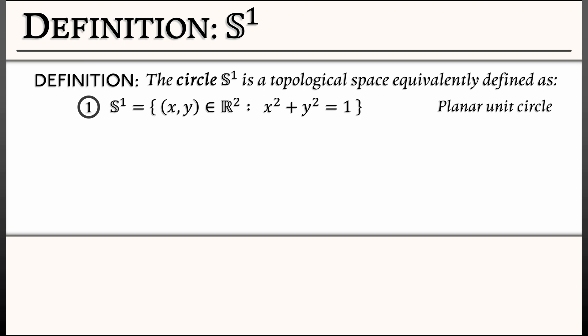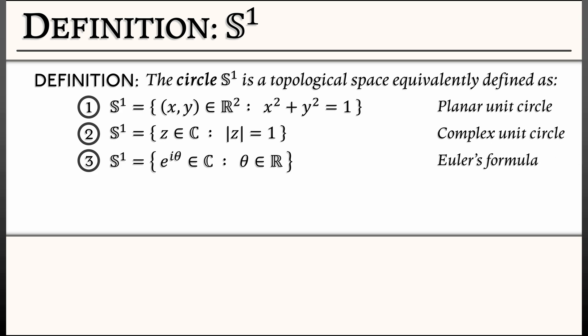But what if we switched to the complex plane? And we said we looked at all the complex numbers that have modulus 1. That gives a shape that looks exactly the same. But if we're working in the complex plane, I remember Euler's formula, which parametrizes that circle by looking at e^(iθ). e^(iθ) is cos(θ) + i·sin(θ). So, for real values of θ, that's going to give you that same circle.